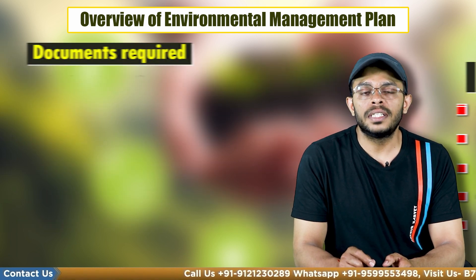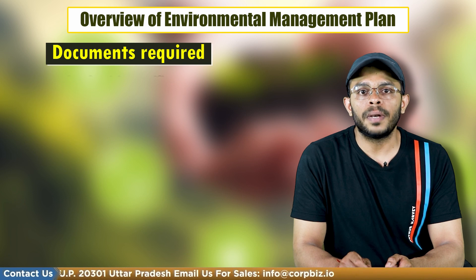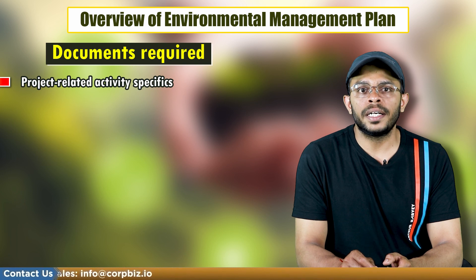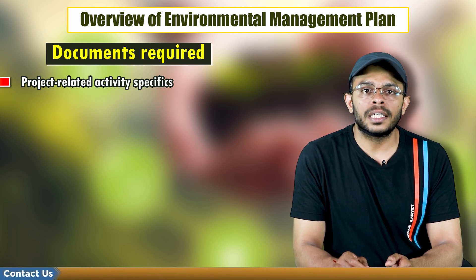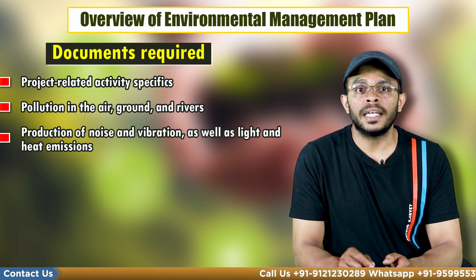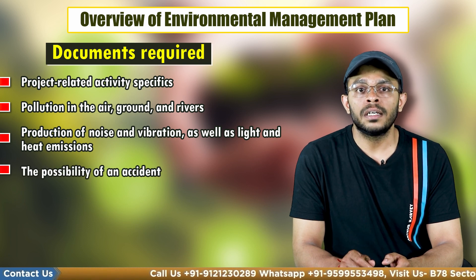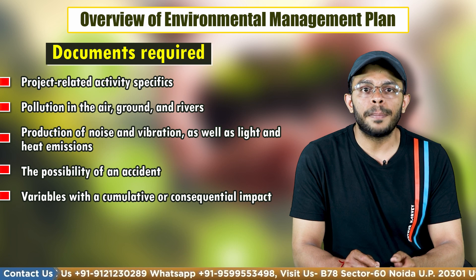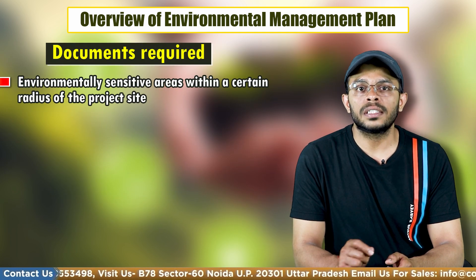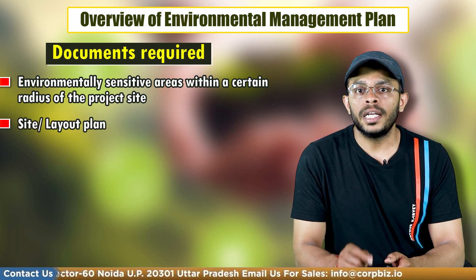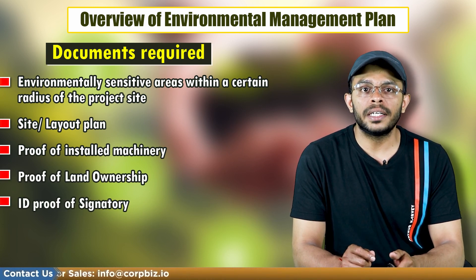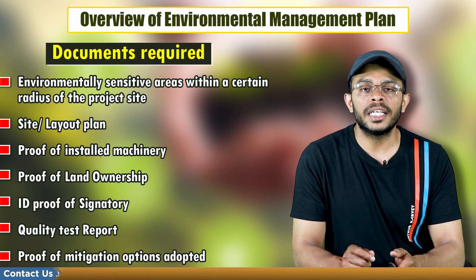Now let's look at the documents that will be needed while developing an environmental management plan. These include project-related activity specifics like project area split, water requirement, trash generation, pollution in the air, ground and rivers, production of noise and vibration as well as light and heat emissions, possibility of accidents, variables with a cumulative or consequential impact, general project information, environmentally sensitive areas within a certain radius of the project site, site or layout plan, proof of installed machinery, proof of land ownership, ID proof of the signatory, quality test reports, and proof of mitigations adopted.